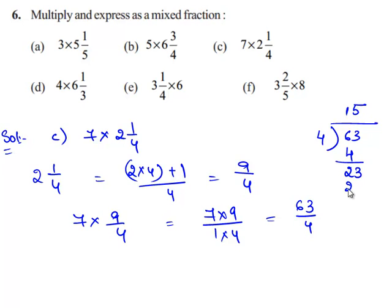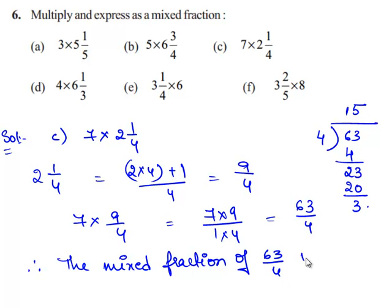So 4 times 5 is 20 and the remainder left over is 3. Therefore, the mixed fraction of 63 divided by 4 is 15 3/4.